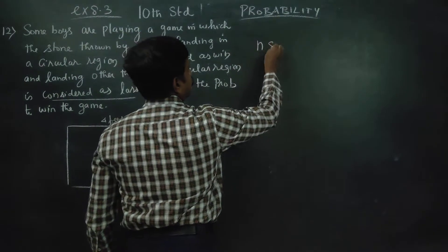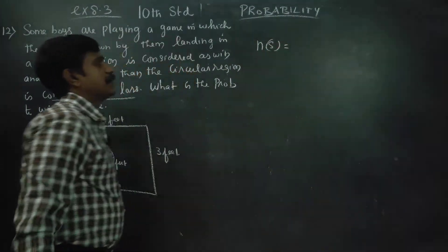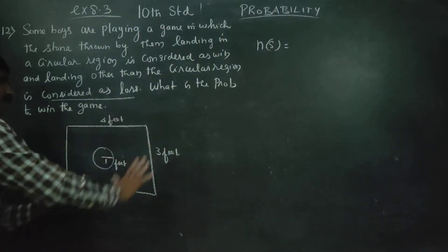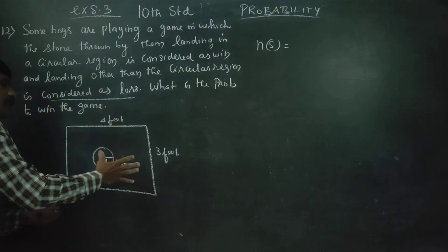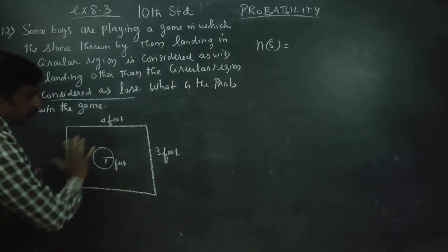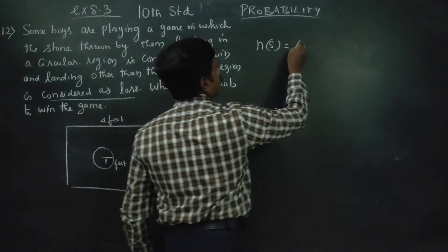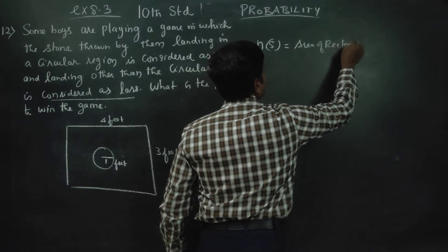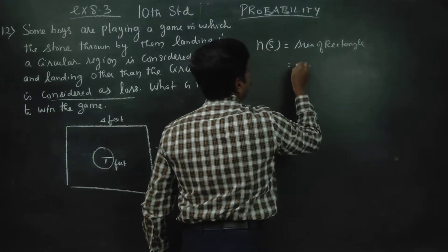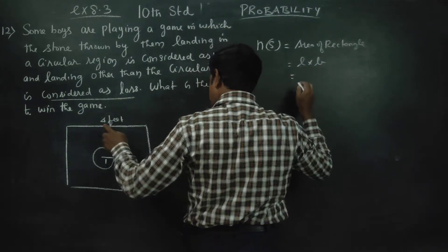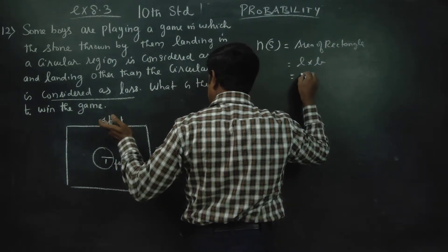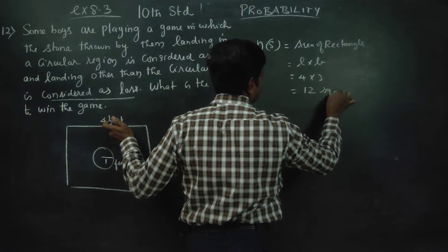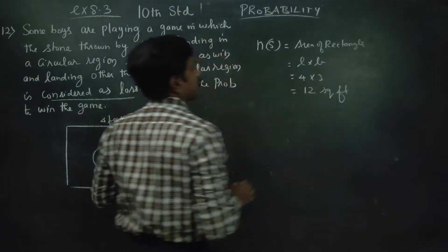First, n of S is the total area. The area of the rectangle is n of S. Area of rectangle equals length into breadth. Length is 4 and breadth is 3, so 4 into 3 equals 12 square feet. This is n of S.